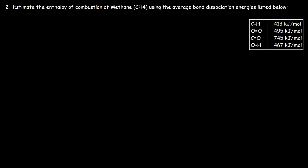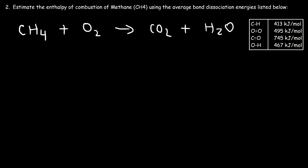Now let's work on another example: estimate the enthalpy of combustion of methane using the average bond dissociation energies listed below. We need to write the combustion reaction for methane. Methane reacts with oxygen gas, and in any combustion reaction you get carbon dioxide and water. We'll assume one mole of methane, so we put a one in front of CO₂.